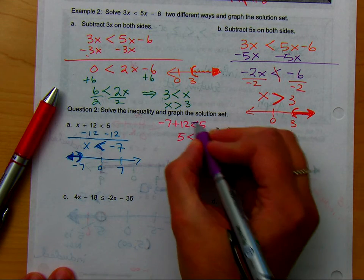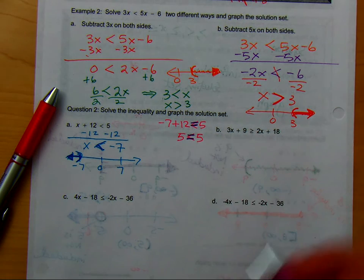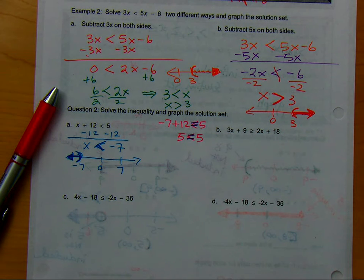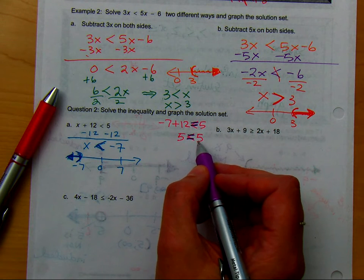So, what I would suggest is start with an equation. Because you're solving this the same way you solve an equation. Then, that is true. 5 is equal to 5.